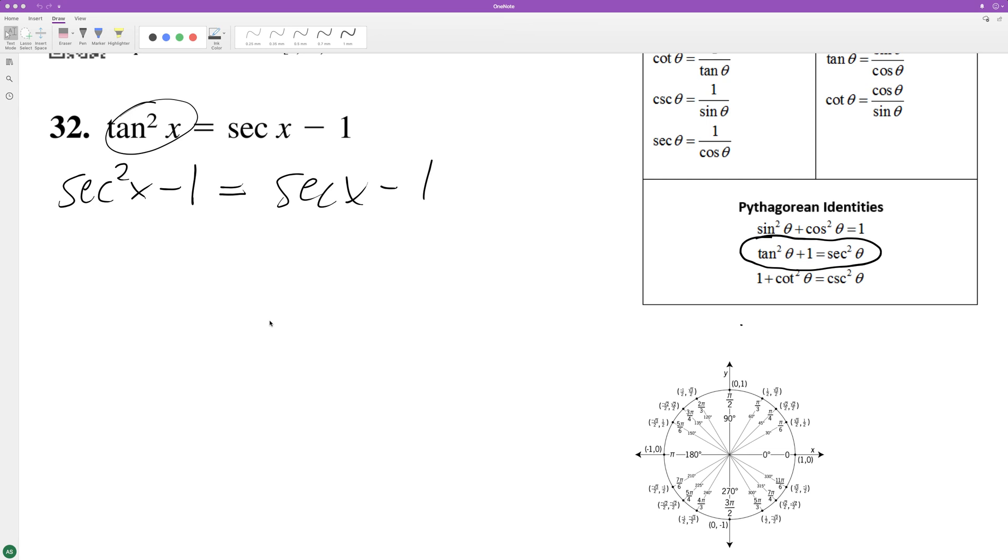Let's go ahead and solve the following problem for x. I converted tangent squared x into secant squared x minus 1. You can see that here with the Pythagorean identity. I just moved the minus 1 over so it equals secant squared x minus 1.